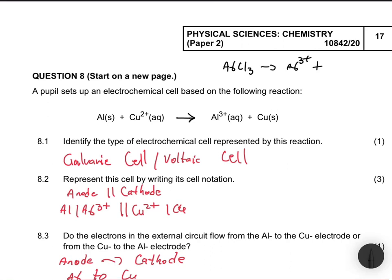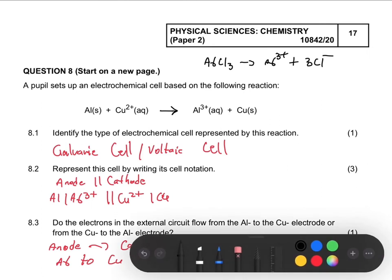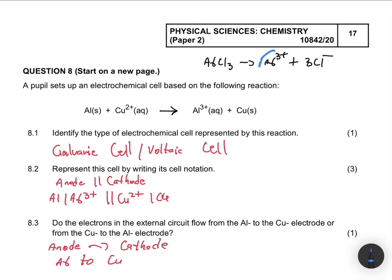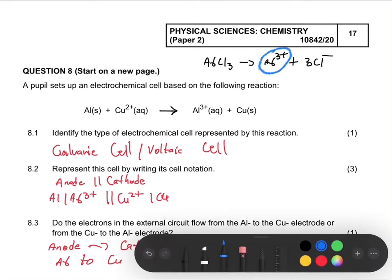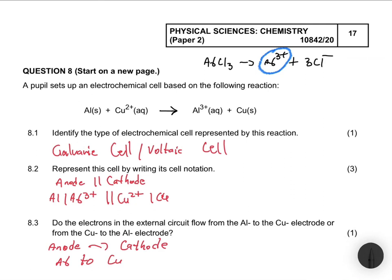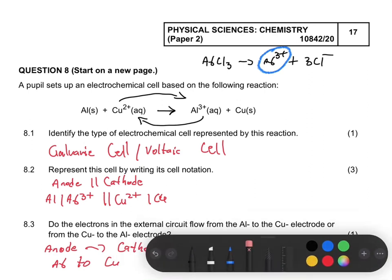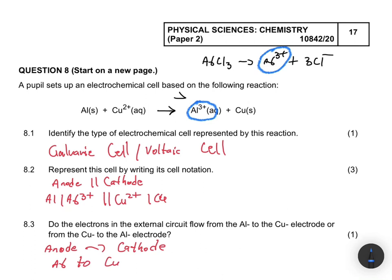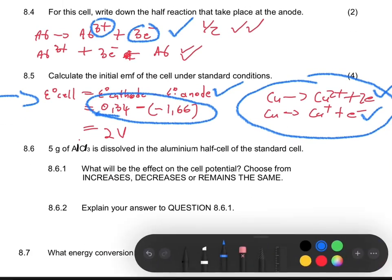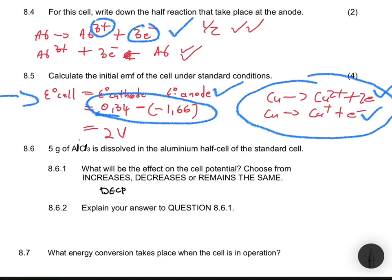When AlCl₃ breaks down, it gives Al³⁺ + 3Cl⁻. So adding 5 grams of AlCl₃ increases the concentration of Al³⁺. The new knowledge here is: if the forward reaction is favoured, the EMF increases; if the reverse reaction is favoured, the EMF decreases. Since we increased the concentration of Al³⁺, by Le Chatelier's principle the reverse reaction is favoured, so the answer for 8.6.1 is: decrease.